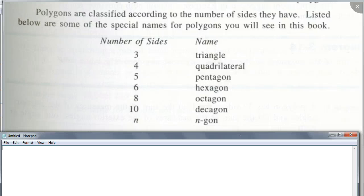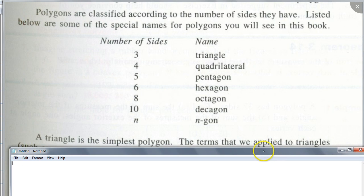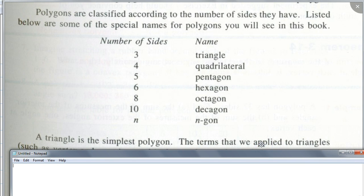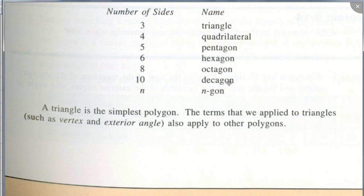Those up to ten have special names — it just happens that way. Now, triangle is the simplest polygon. Do you think the terms we apply for a triangle will also apply for these polygons? Yes — such as vertex and exterior angle. It's going to be the same as for a triangle.